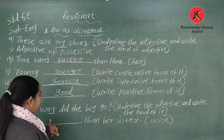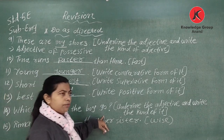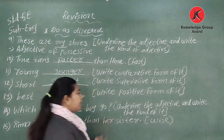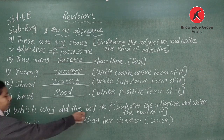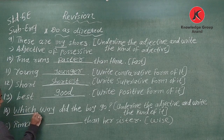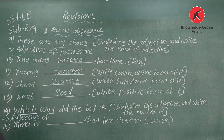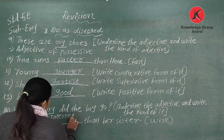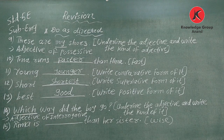Number fourteen: 'Which way did the boy go?' Underline the adjective and write the kind. We need to find the adjective type here. The adjective is 'which' — this is an adjective of interrogative type — I-N-T-E-R-R-O-G-A-T-I-V-E.